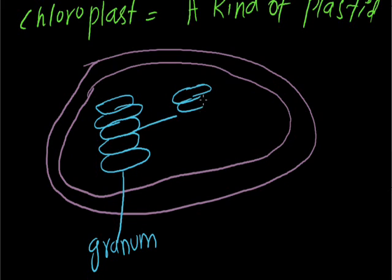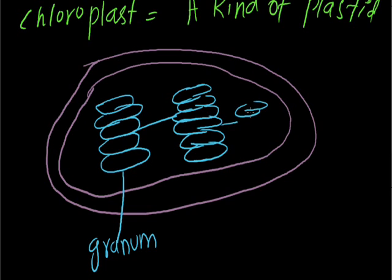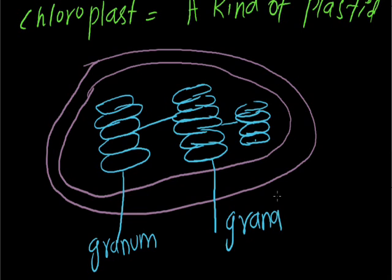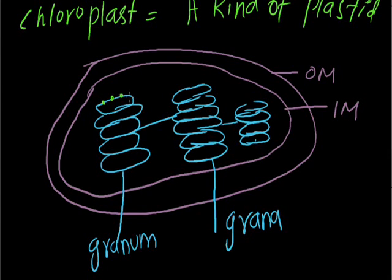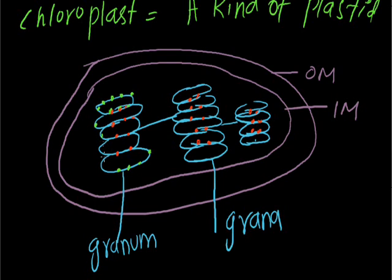So it is: outer membrane, inner membrane, and thylakoid — in which there are some chlorophyll molecules present. These green colors are of chlorophyll molecules. And the red ones — these are photosynthetic pigments, green and red. These green pigments are for photosystem one, and red are for photosystem two. The green outer part is photosystem one, and the red is for photosystem two.